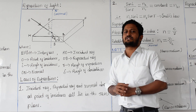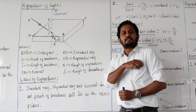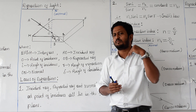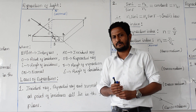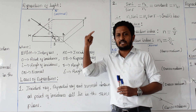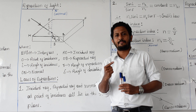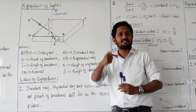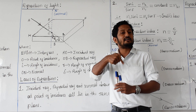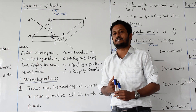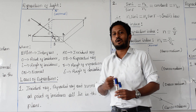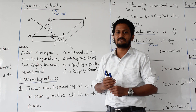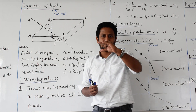Look at the first law. This is the same law we see in reflection. The incident light ray, the normal drawn at the point of incidence, and the refracted light ray — all three are lying in the same plane. Here is a glass slab to illustrate.